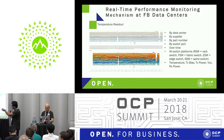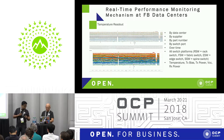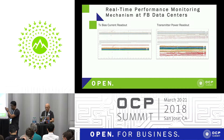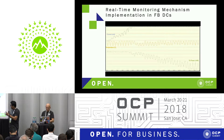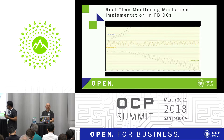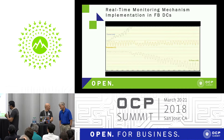This is a typical example of the temperature readout from the tool. Similarly, we can pull all the data and monitor bias current and the transmitter output power. When we collected all this real-time data, we found a very interesting correlation between temperature, current, and optical power.